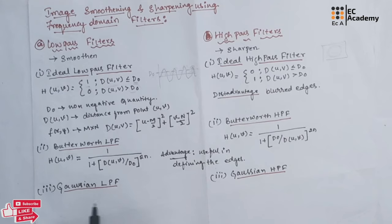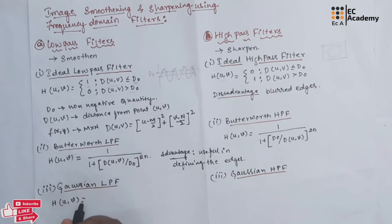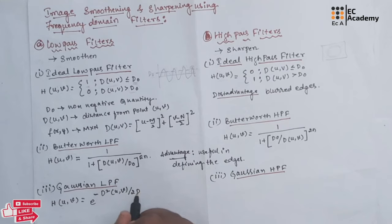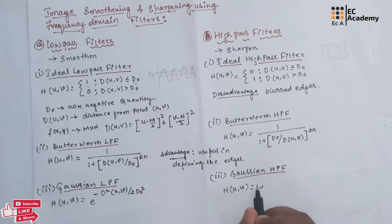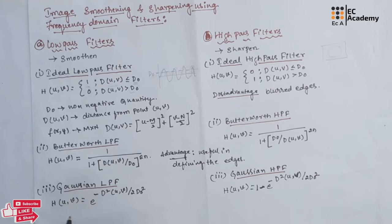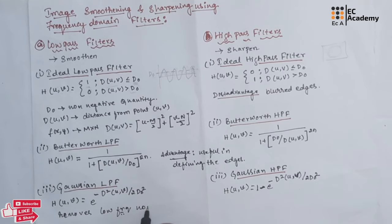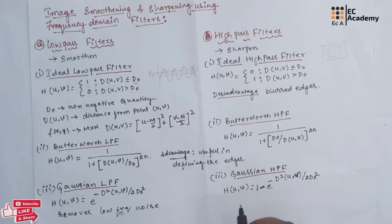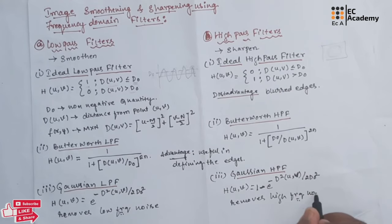The next type of filters are Gaussian low pass filter and Gaussian high pass filter. The Gaussian low pass filter transfer function is: H(u,v) = e^(−D²(u,v) / 2D0²). For the high pass filter: H(u,v) = 1 − e^(−D²(u,v) / 2D0²). The advantage of Gaussian low pass filter is that it removes low frequency noise, and the advantage of Gaussian high pass filter is that it removes high frequency noise.